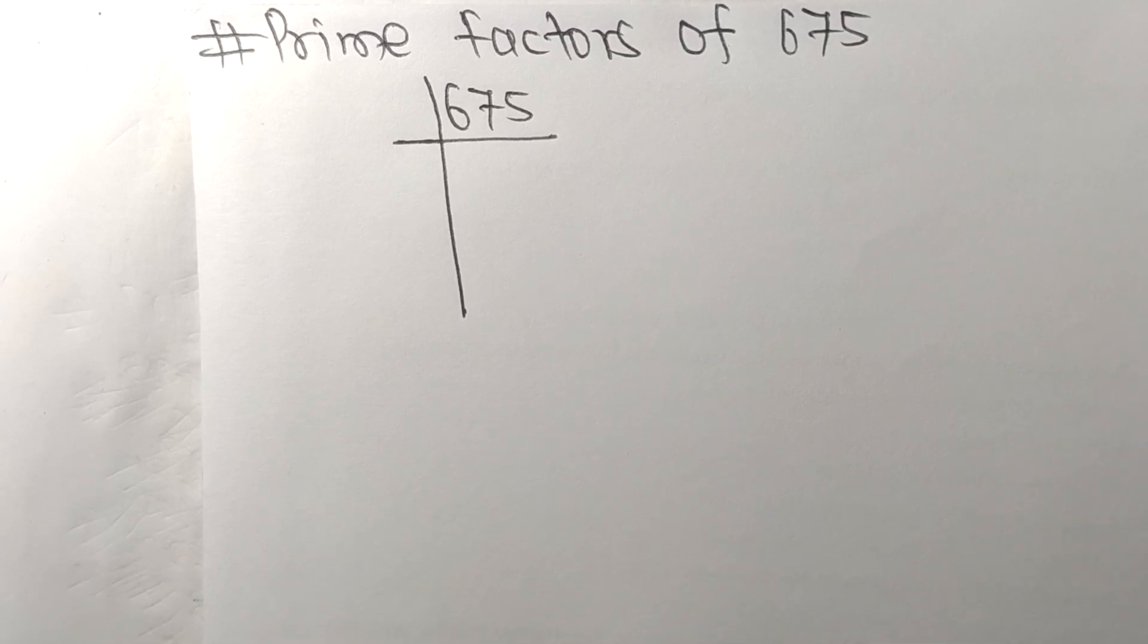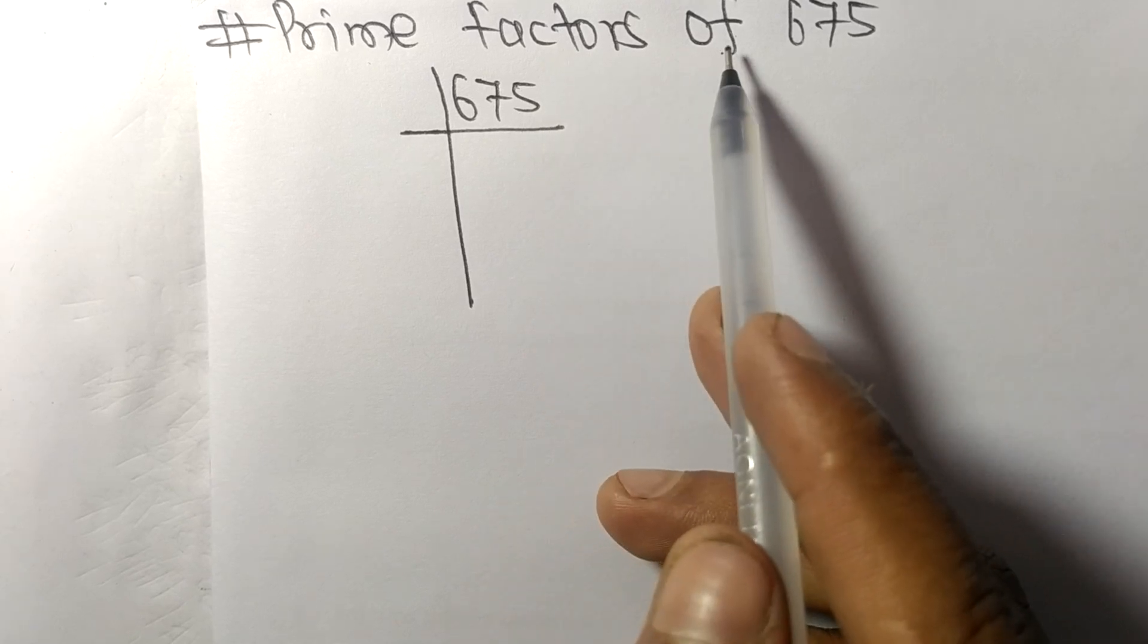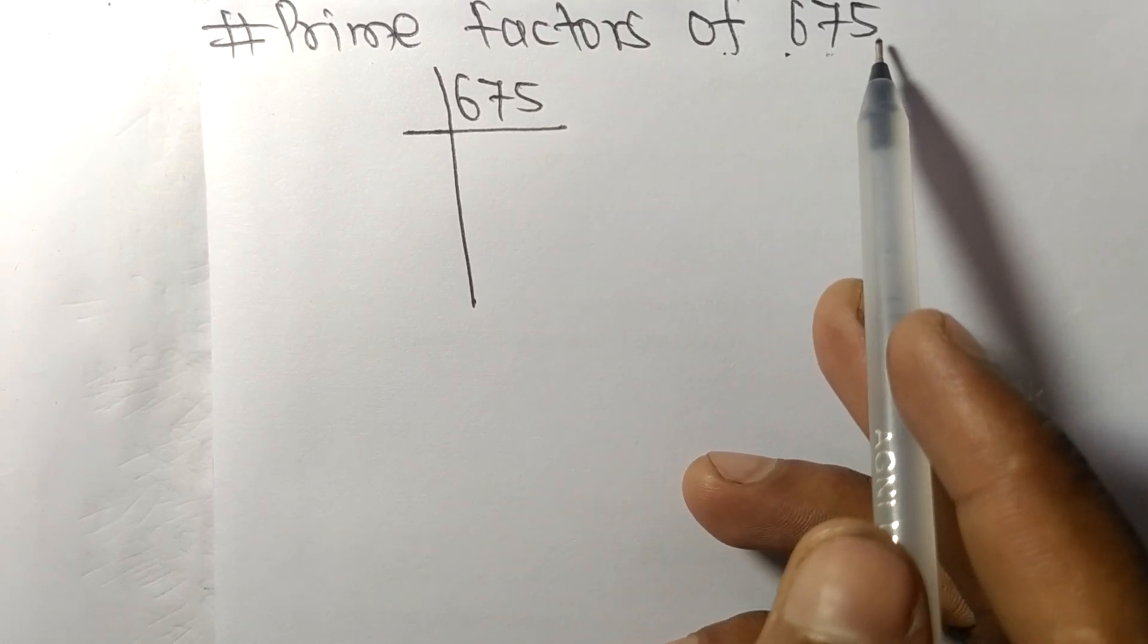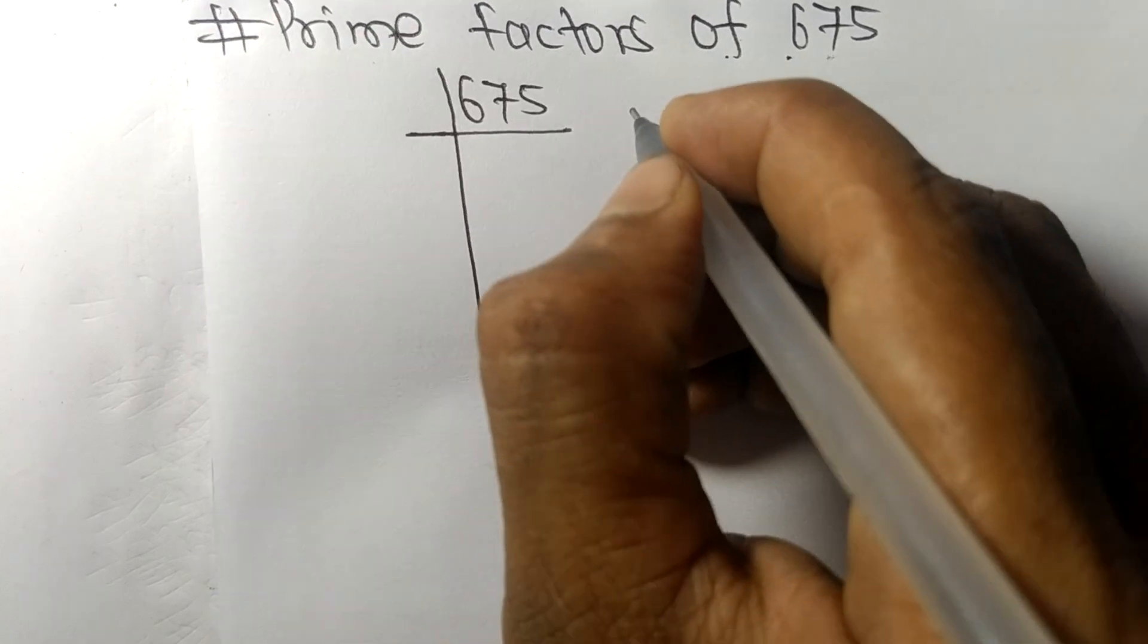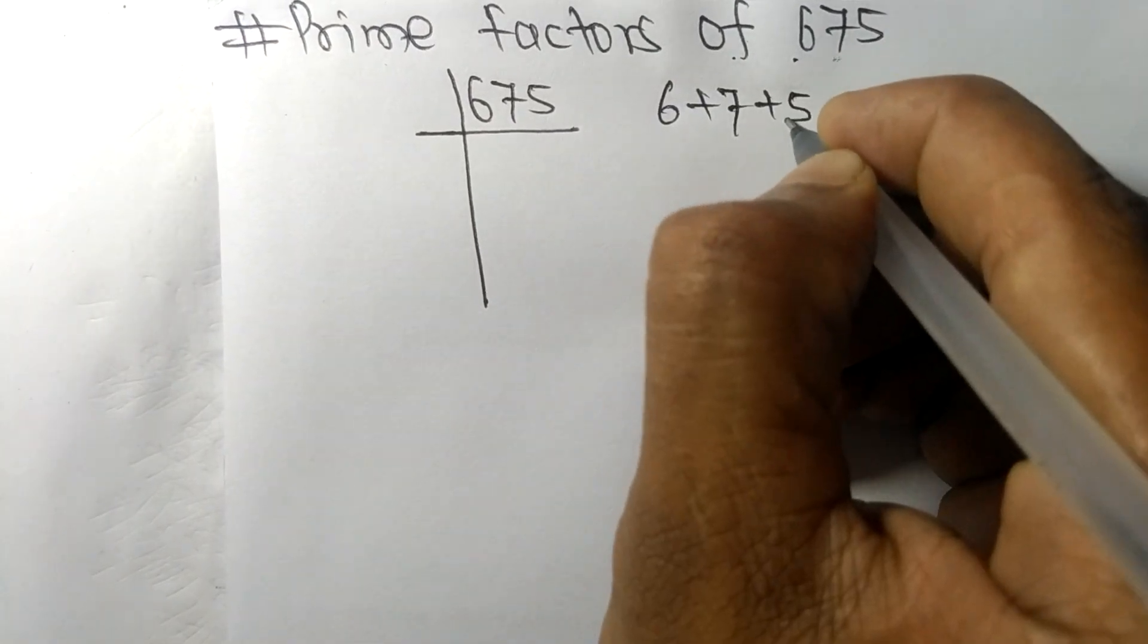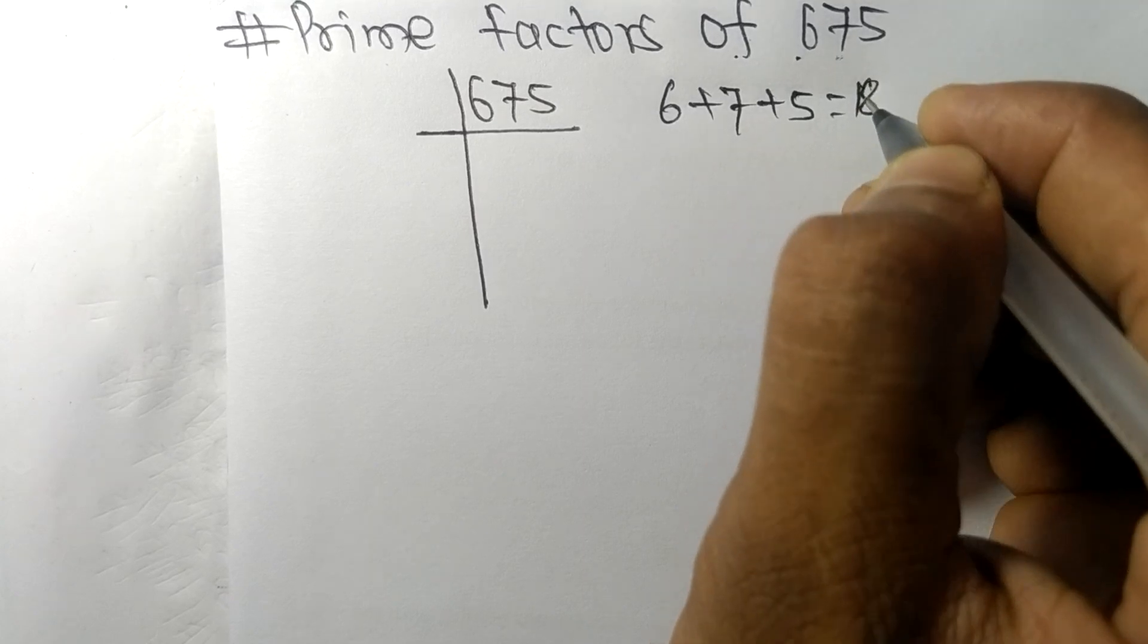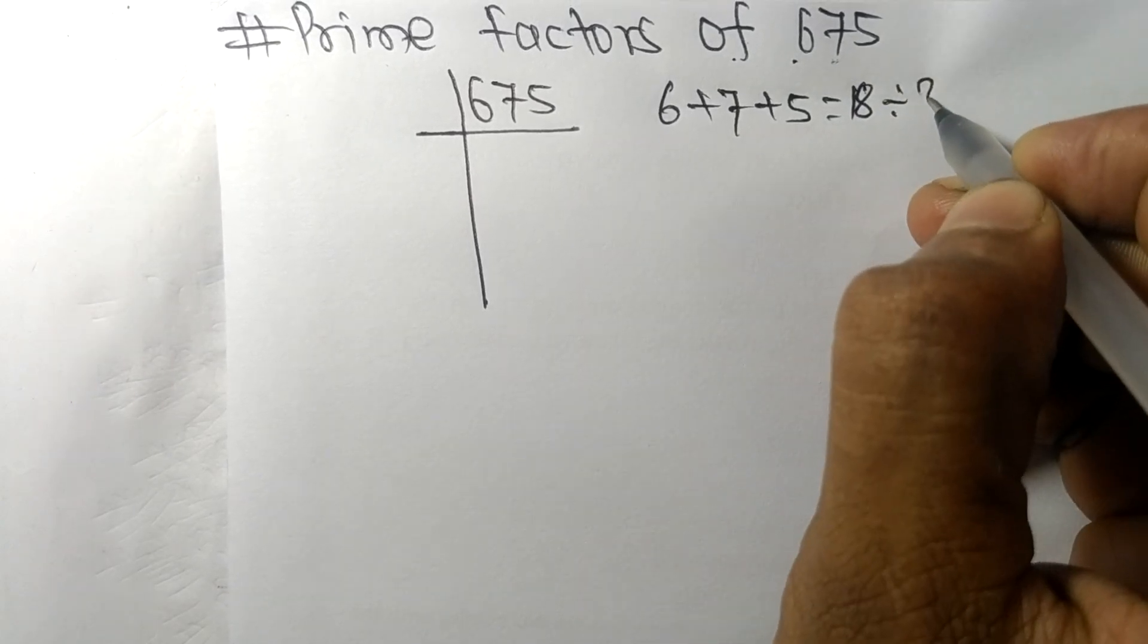Today in this video we'll learn to find the prime factors of 675. When we add all these digits, 6 + 7 + 5, we get 18, and 18 is exactly divisible by 3, so 675 is also divisible by 3.